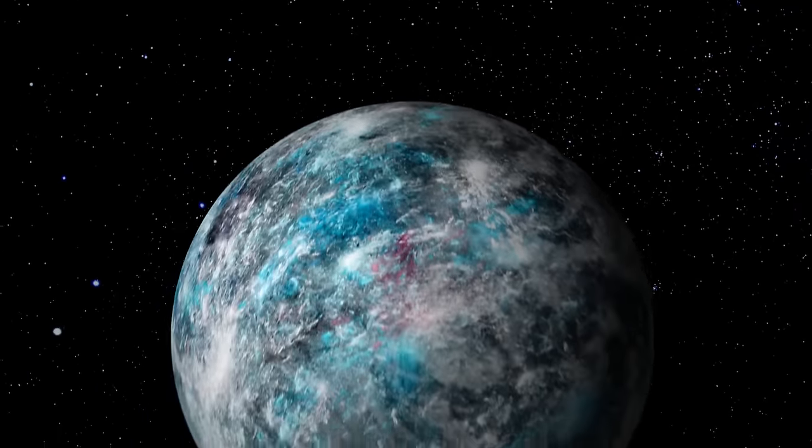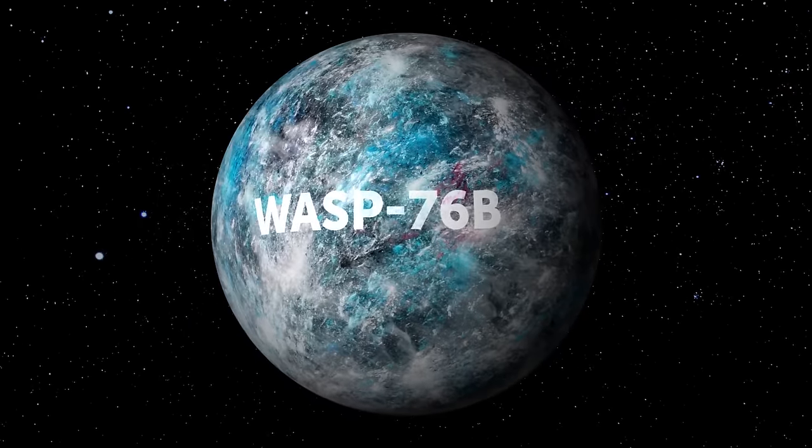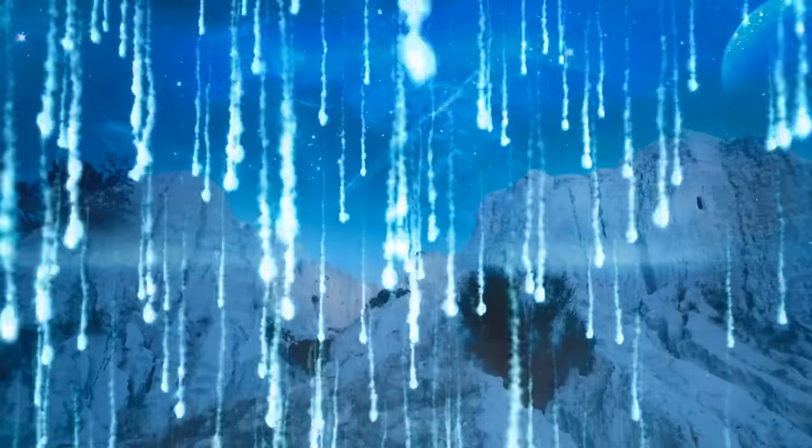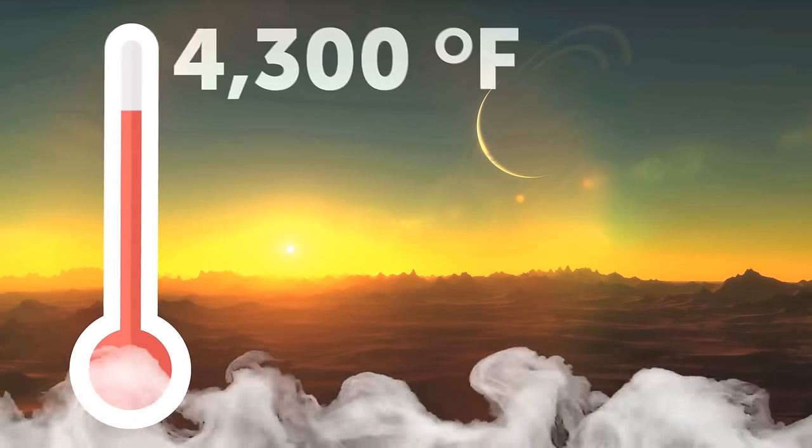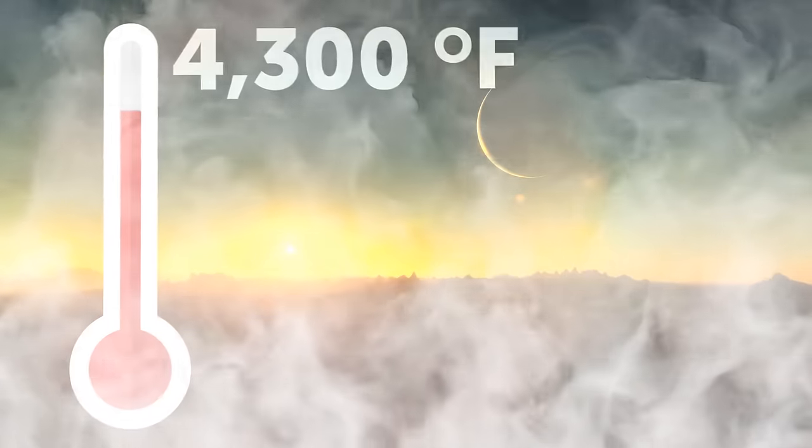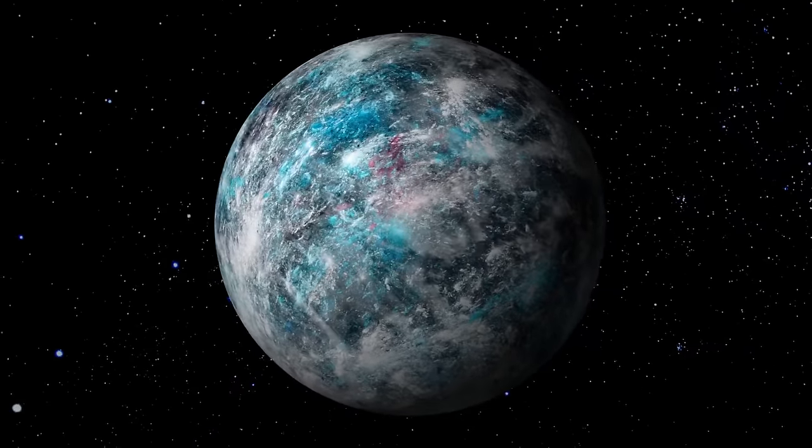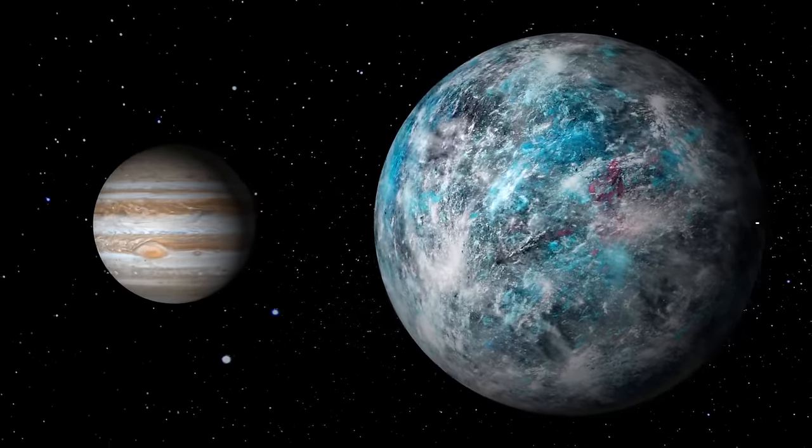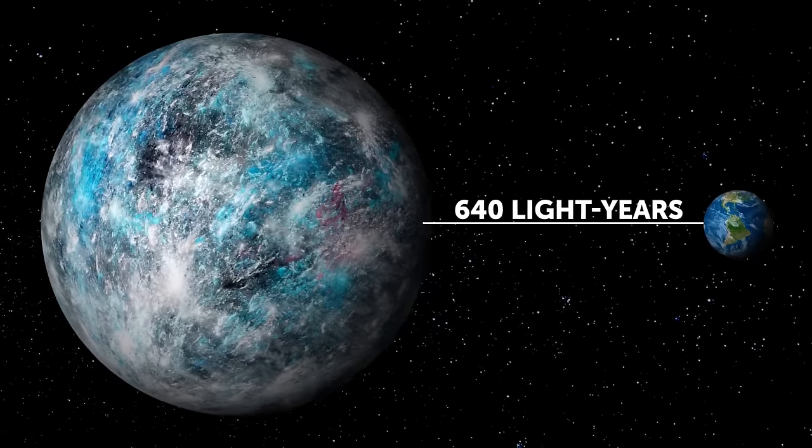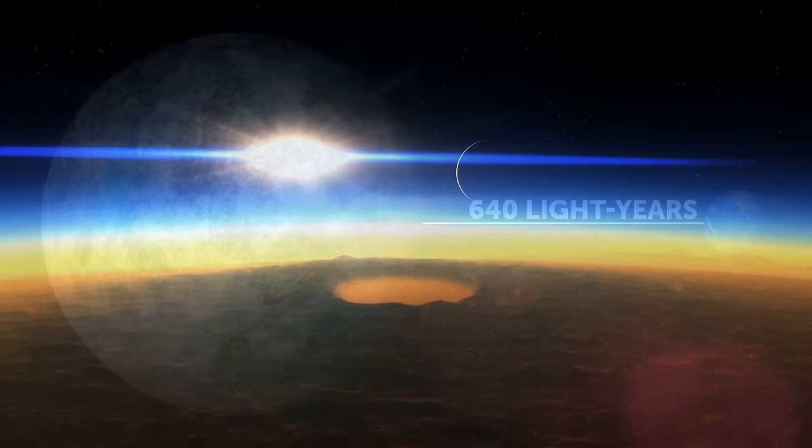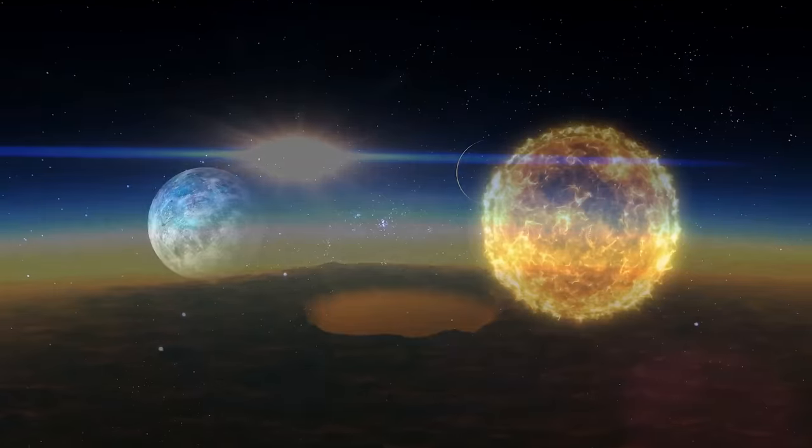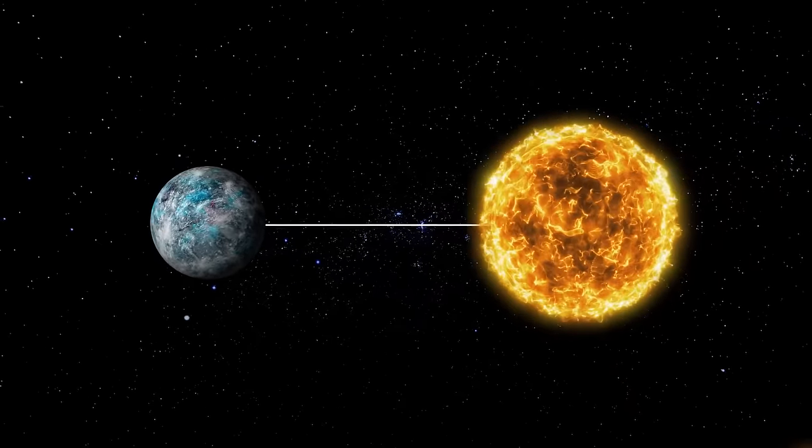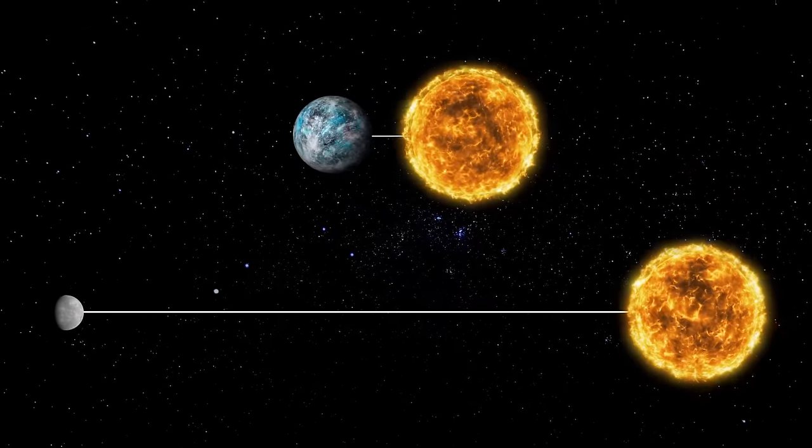Another planet you probably shouldn't set foot on is WASP-76b. There, it rains iron on the night side of the planet. And the temperature on the daytime side rises up to 4,300 degrees Fahrenheit. That's hot enough to vaporize most metals. This exoplanet is a bit larger than Jupiter in terms of size and is located 640 light-years away from Earth. Such terrifying weather conditions in this world are caused by its unusual orbit. The distance between the planet and its parent star is 10 times shorter than the distance between Mercury and the Sun.